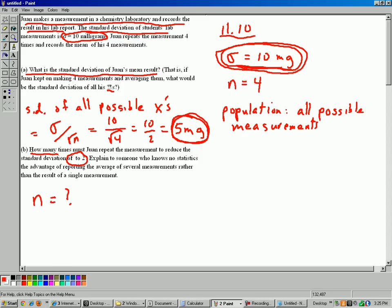We're solving for n, the number of times Juan is going to take a measurement in order for the standard deviation of all the x-bars to equal 2. So we set up a little equation here. Sigma over square root of n equals 2. All right, sigma we know. Let's replace the sigma with 10. n, that's the standard deviation of the population. And then we can algebraically solve this formula here.